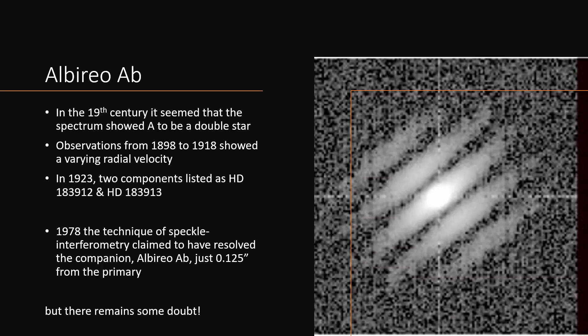And in 1978, the technique of speckle interferometry was being developed and used and claimed to have resolved a separate companion, this Albireo AB, just 0.125 arc seconds from the primary. No wonder it couldn't be spotted by ordinary techniques. But I'm afraid there's still doubt about whether or not these detections were real.